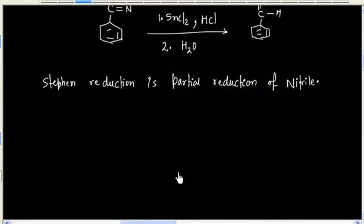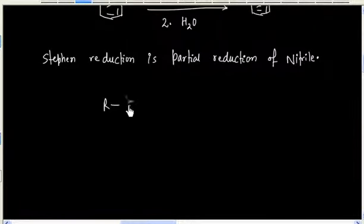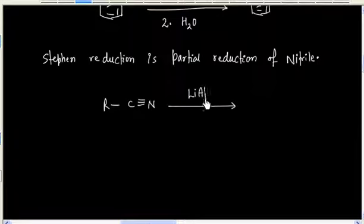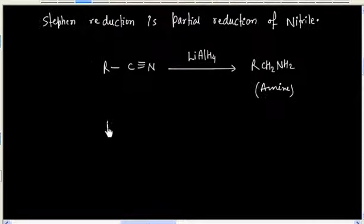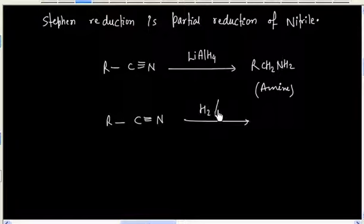If we do full reduction, let's say with lithium aluminum hydride, we will have an amine. Similarly, catalytic reduction with hydrogen in the presence of nickel also gives full reduction, and the final product is amine.